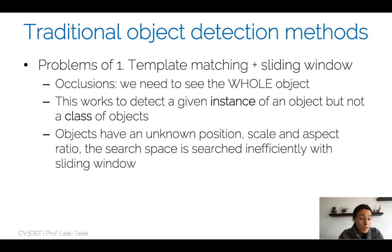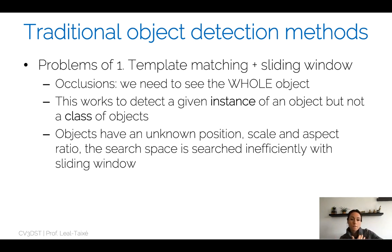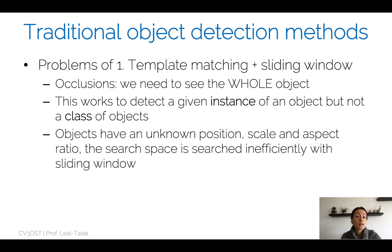In real life, objects have an unknown position, unknown scale, unknown aspect ratio, and unknown pose. The search space is explored very inefficiently with a sliding window. Imagine your flamingo is a bit further away and displayed a little smaller — you would have to test not only different positions but also different scales of your template to detect flamingos that are farther away from the camera. So there are many conditions that need to be fulfilled for this template matching plus sliding window approach to actually work.